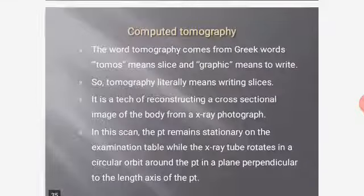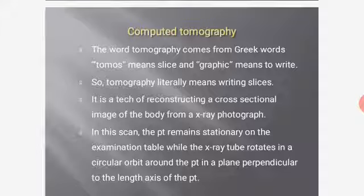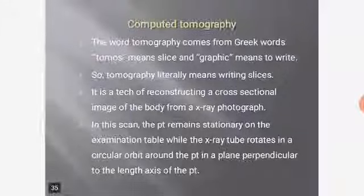Computed Tomography: The word 'tomography' comes from the Greek words tomos (slice) and graphia (to write), so it literally means 'writing slices.' It is a technique for reconstructing a cross-sectional image of the body from X-ray photographs. In this scan, the patient remains stationary on the examination table while the X-ray tube rotates in a circular orbit around the patient, perpendicular to the length axis of the patient.